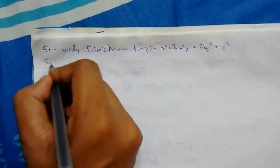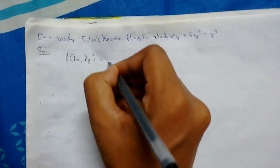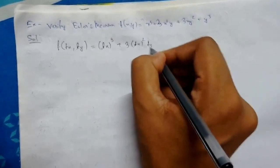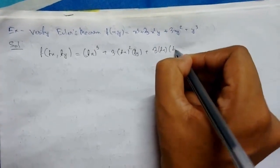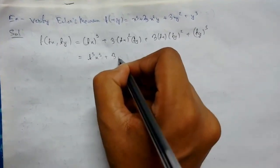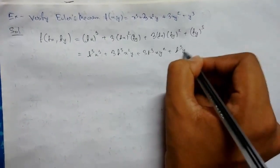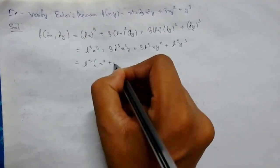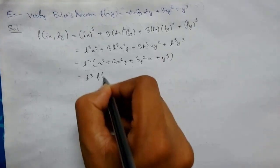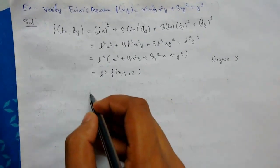Let us see this example: verify Euler's theorem for f(x, y). Solution: first we need to prove whether it is homogeneous or not. Replacing x with tx and y with ty, we get 3tx whole squared times ty plus 3tx times ty whole squared plus ty whole cubed, which equals t cubed x cubed plus 3t cubed x squared y plus 3t cubed x y squared plus t cubed y cubed. Taking t cubed common, we get t cubed times f of x, y. So it is a homogeneous function of degree 3.